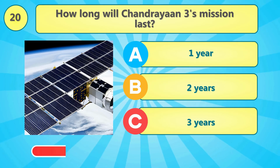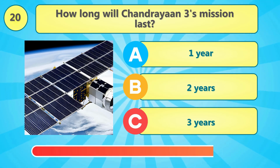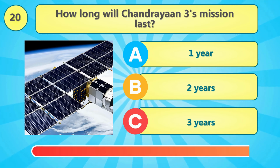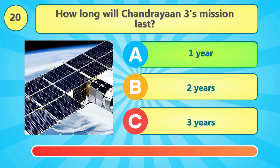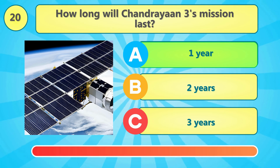How long will Chandrayaan 3's mission last? The answer is 1 year.